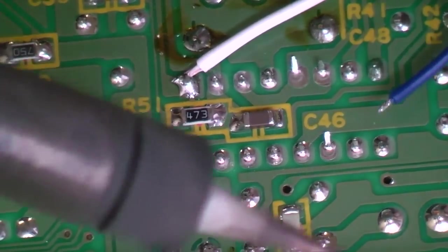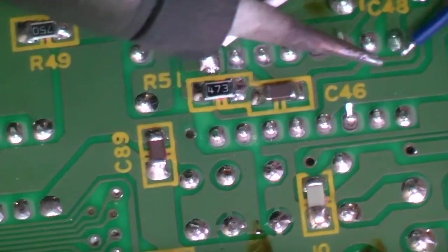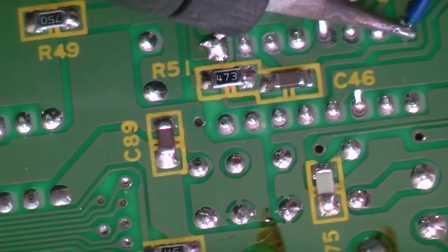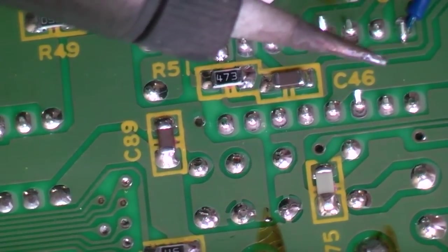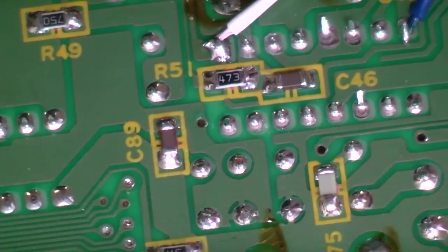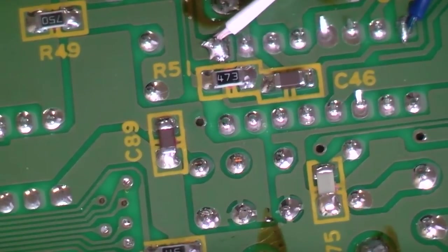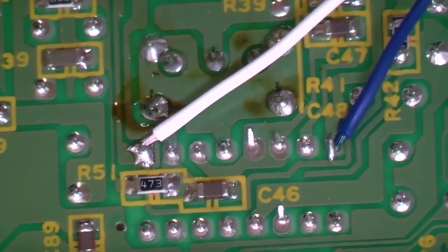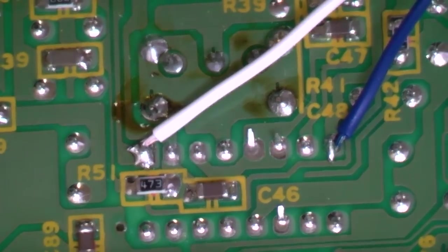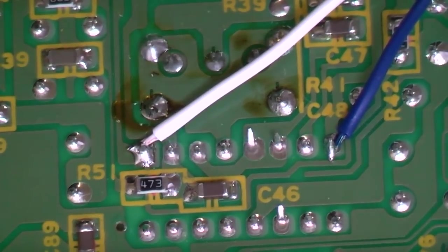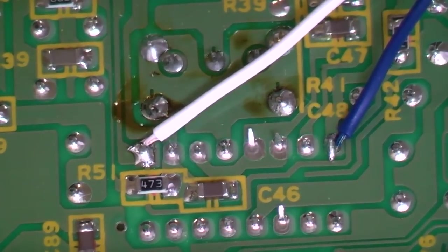Now we'll just solder in our wires. There we go, nice and easy. So that's our left and right audio. Now we just need to pick up our ground from the S-video mod that we'll do in a moment, and then we'll be hooking things up.